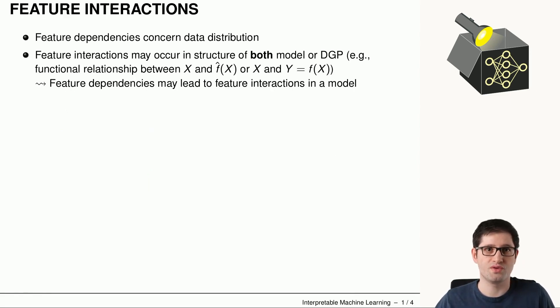As we have already learned, feature dependencies concern mainly the data or the joint distribution between multiple random variables. In contrast, the feature interactions can occur in the model, basically a property of a model or a property of data generating process.